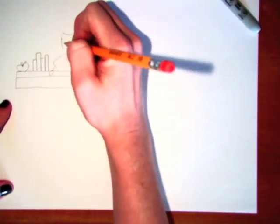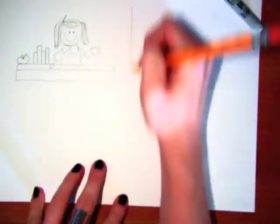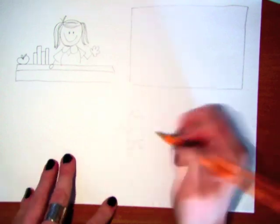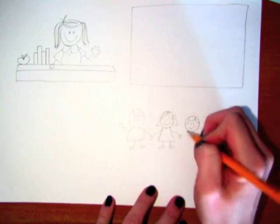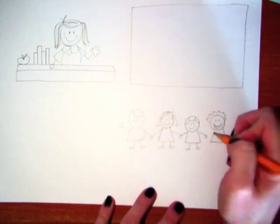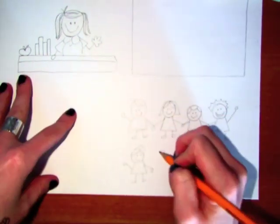So why, you ask, do we need Bloom's? Well, pretend for a moment that you're an English teacher. One of your unit standards is the following. Determine the meaning of words and phrases as they are used in the text, including figurative and connotative meanings. Analyze the cumulative impact of specific word choices on meaning and tone.